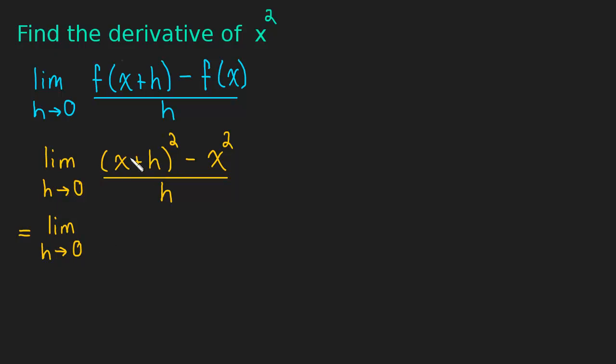So let's expand out x plus h squared. And we'll get x squared plus 2xh plus h squared. And then we still have this minus x squared over here divided by h. And now look at this x squared. That's a positive x squared and a minus x squared. Those will cancel. So that's nice.